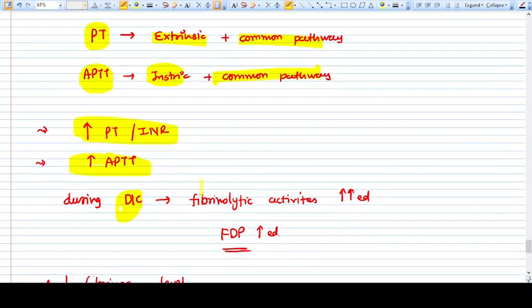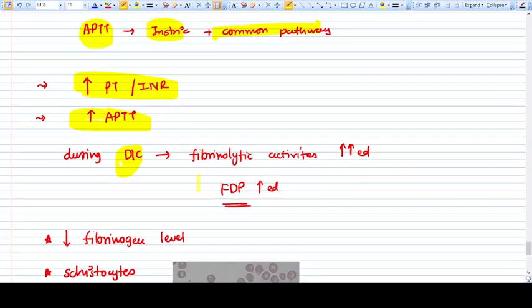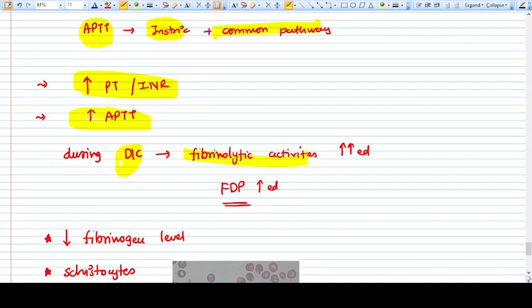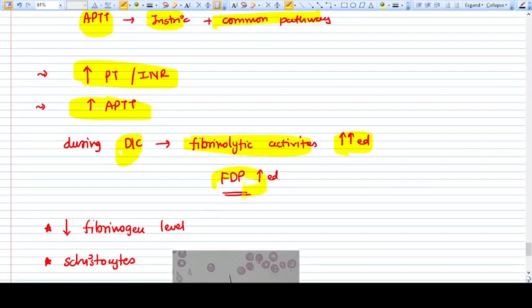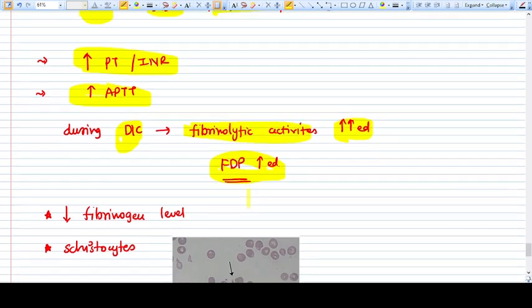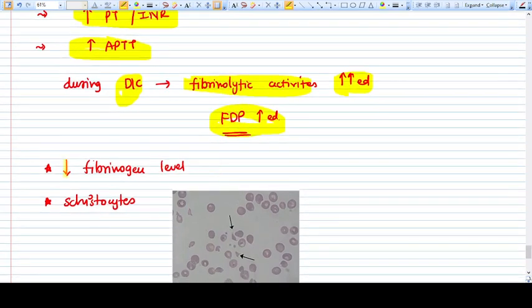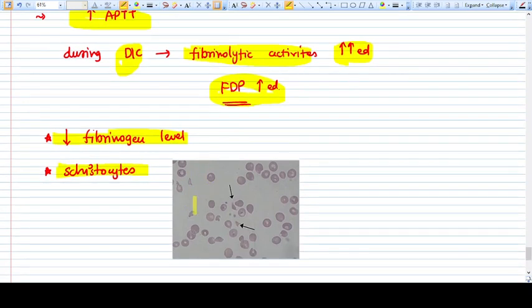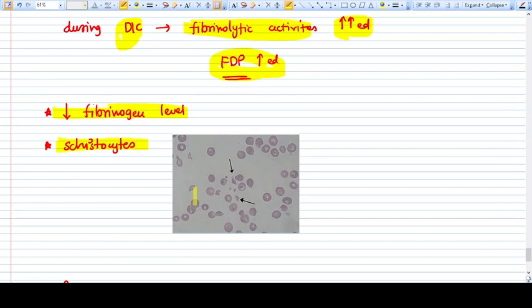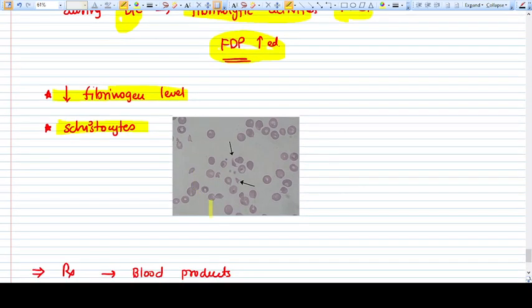During DIC, fibrinolytic activities also increase along with coagulation, so fibrin degradation products FDP will be also raised. Fibrinogen level might decrease. You can see on the blood picture, on the peripheral smear, these schistocytes - they are basically broken RBCs.